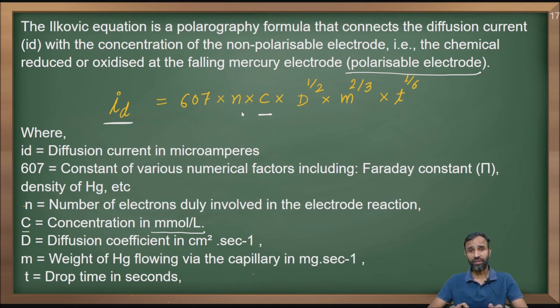Id is the diffusion current. The value comes out in micro amperes. Keep in mind, these units are very important. If the values are not given in those units, you have to convert them into those particular units.